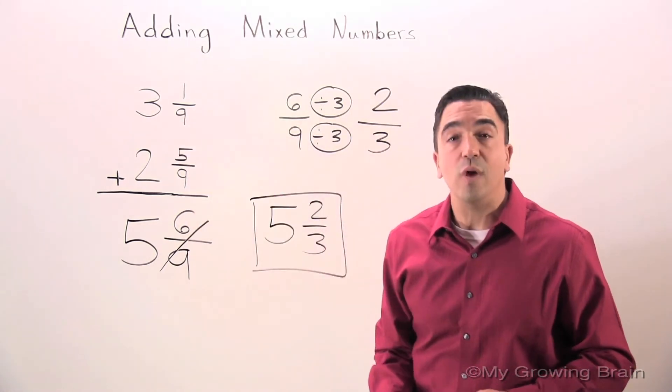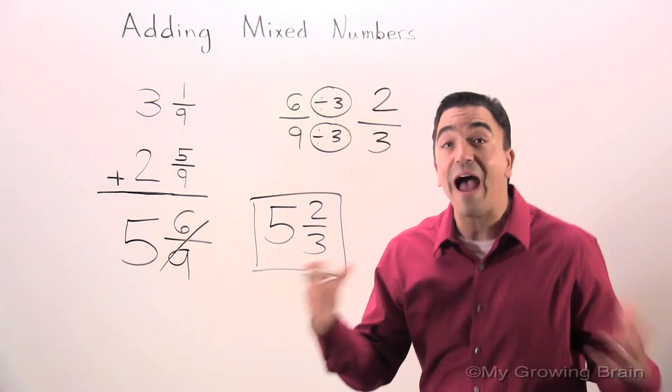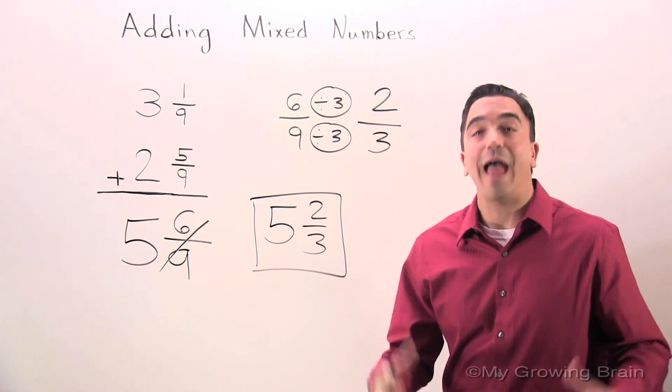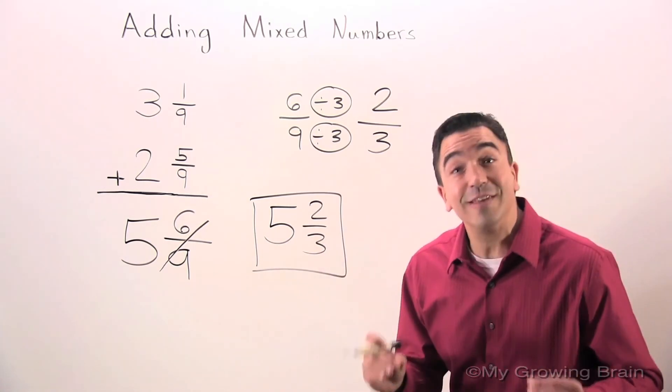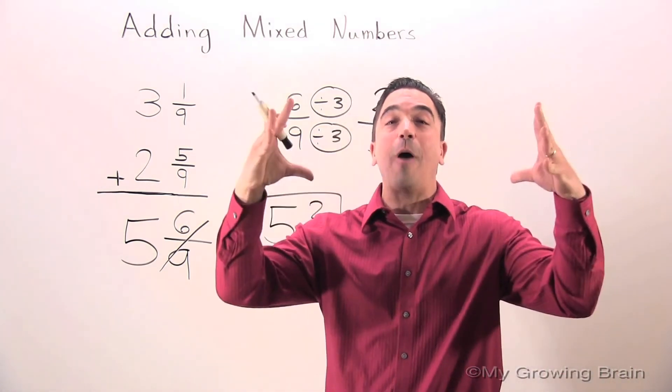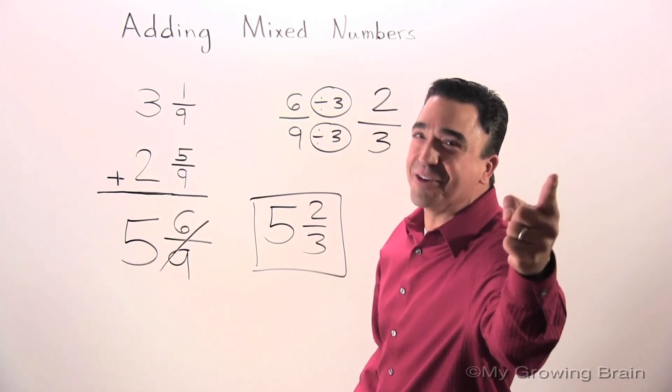3 and 1/9 plus 2 and 5/9 gives us a sum of 5 and 2/3. This concludes our lesson on adding mixed numbers. Coach Mike at My Growing Brain Challenge Yourself!